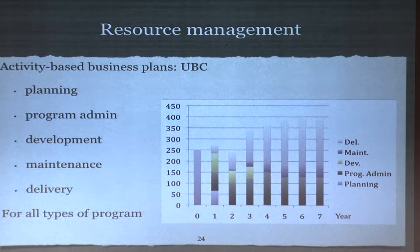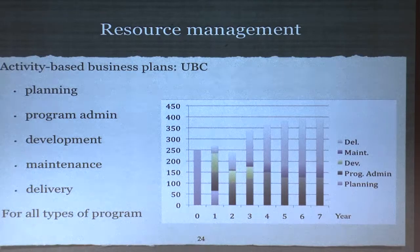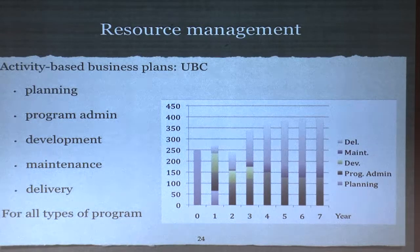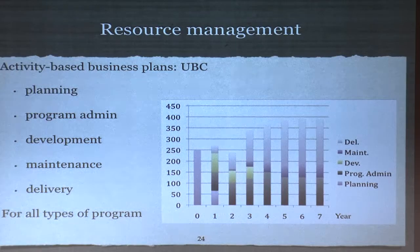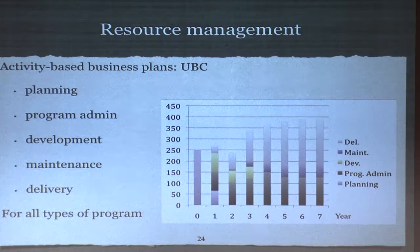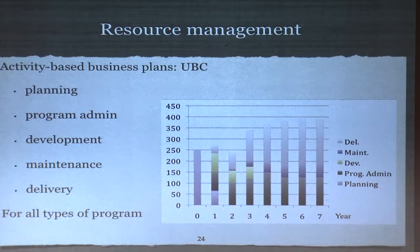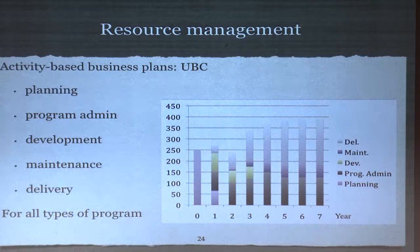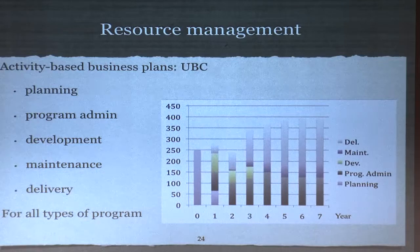Here's an activity-based business plan from UBC. UBC is now asking all programs — new programming whether credit, undergraduate, or graduate — to come up with a business plan over five years: where the revenue is going to come from, how many students, and so on. For an online master's program, you look at planning costs, program administration, development costs, maintenance, and delivery. As the program goes on and more students enroll, the delivery costs go up. But this allows you to work out costs. What's really interesting is that development costs are less than 15% of the total cost over seven years. We have all this focus on reducing content costs — MOOCs and all the rest — but it's only 15% of the cost. The real cost is delivery.